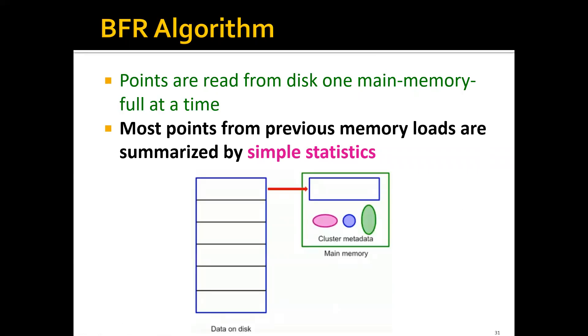In the BFR algorithm, points are first read from the disk, one memory full at a time. Most points from the previous memory loads are summarized by simple statistics. For example, on the disk we have a very large dataset split into chunks. The memory will read one chunk of data, calculate some statistics and cluster metadata, then discard this first chunk and read the second chunk and do similar stuff.